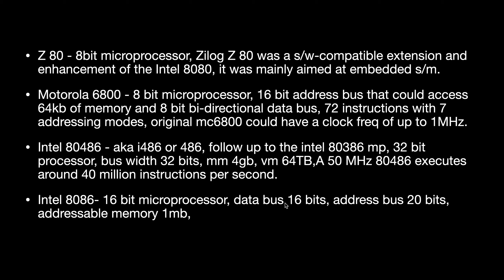To clarify: the 8086 has a 16-bit data bus and a 20-bit address bus. Also note: Intel 8080 is also an 8-bit microprocessor. After the 8080, they developed the 8086, which is a 16-bit microprocessor. Before the 8086, there were 8008 and 8080, both 8-bit microprocessors.